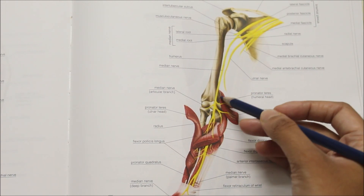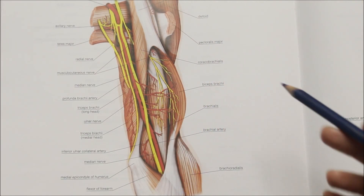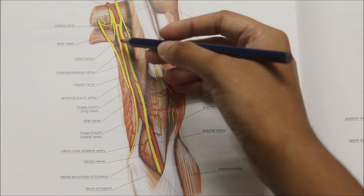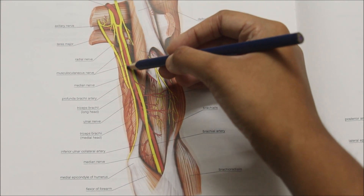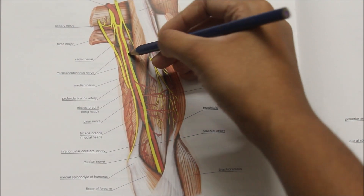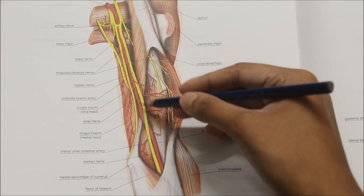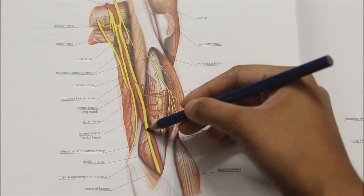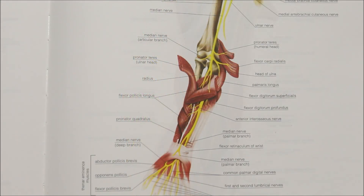At the cubital fossa, it is the medial-most structure. This is the anterior superficial view of the left upper limb. This is the median nerve and this structure in red is the brachial artery. In the arm, the median nerve lies lateral to the brachial artery. In the middle of the arm, it crosses from the lateral to the medial side of the brachial artery, and continues on the medial side up to the elbow.